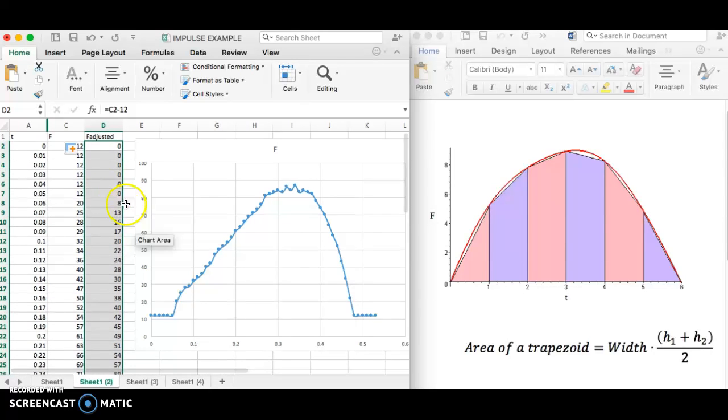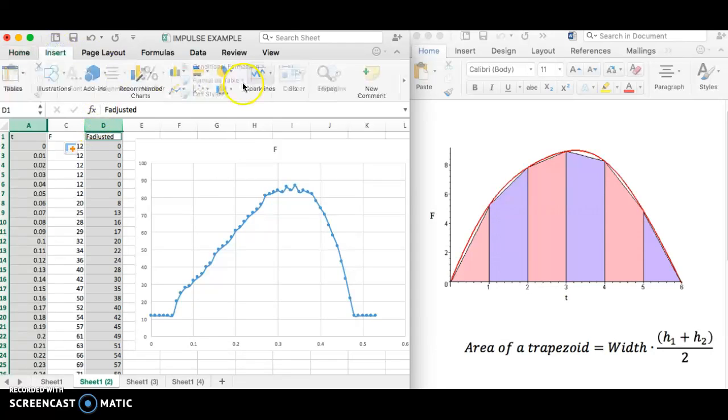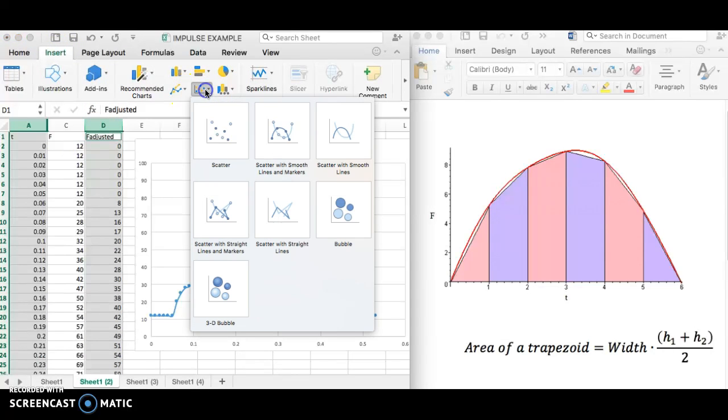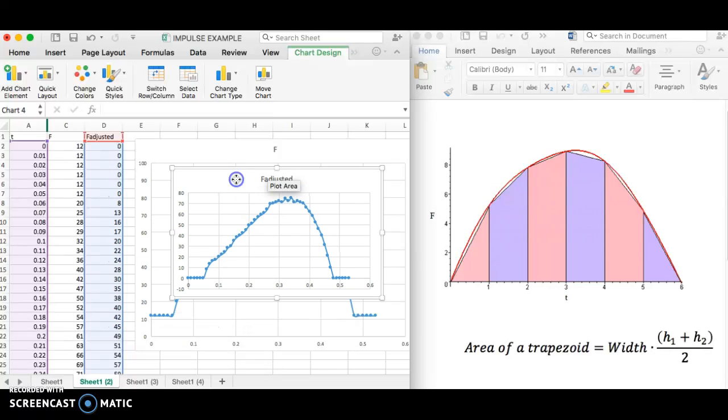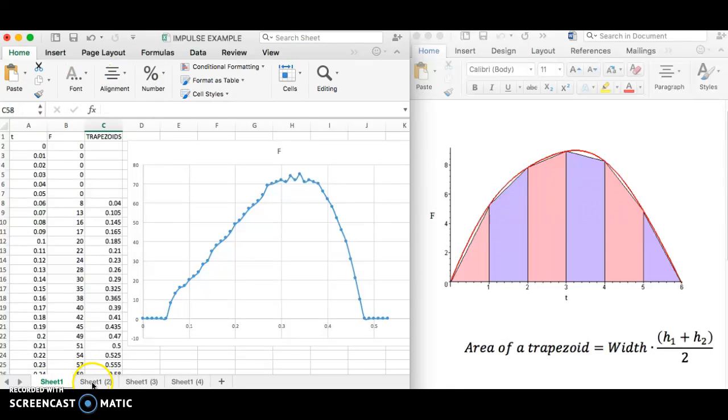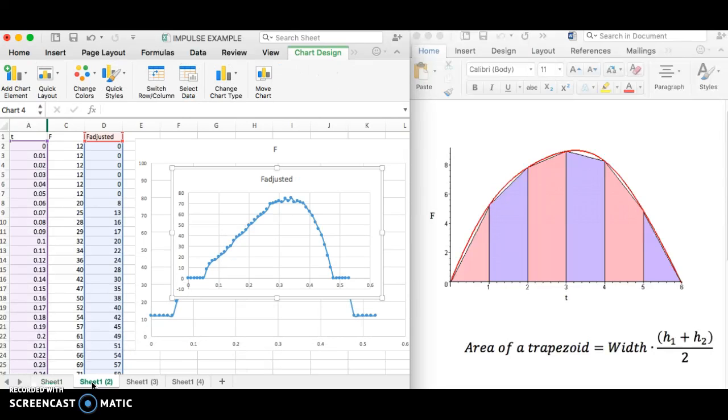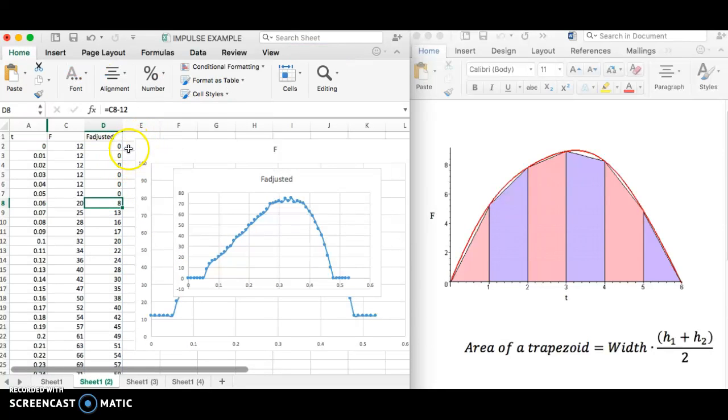And then the graph that I'm going to want to make is going to be time versus the adjusted force here. Again, the point of this really isn't actually the graph, per se. There's my nicer graph that actually starts at zero and is exactly the same, actually, as the one that I made over here in this first sheet. It's just shifted. I had to shift the values down.